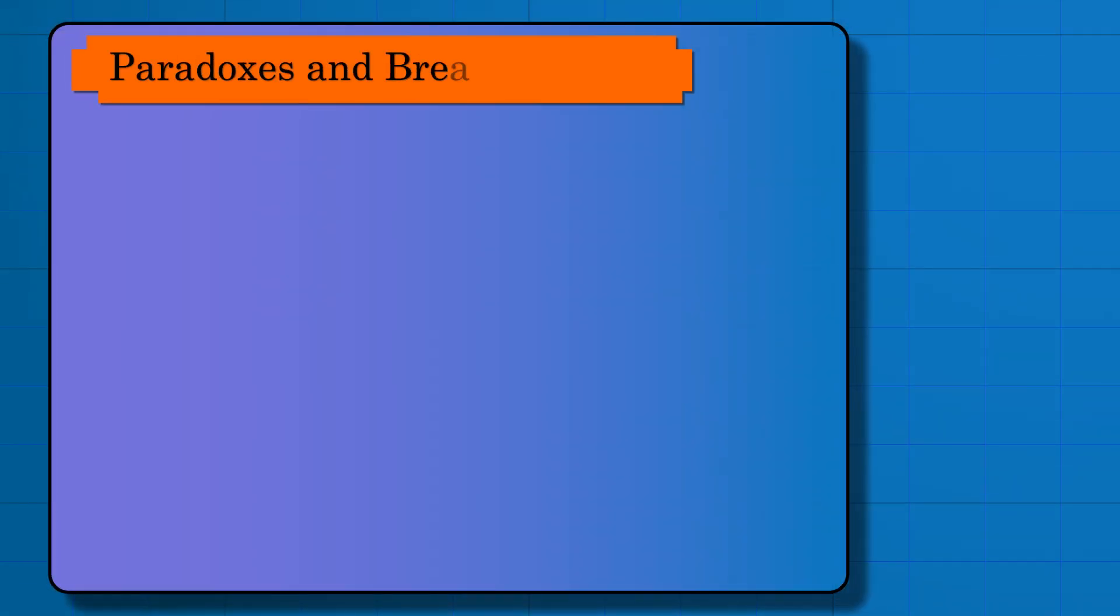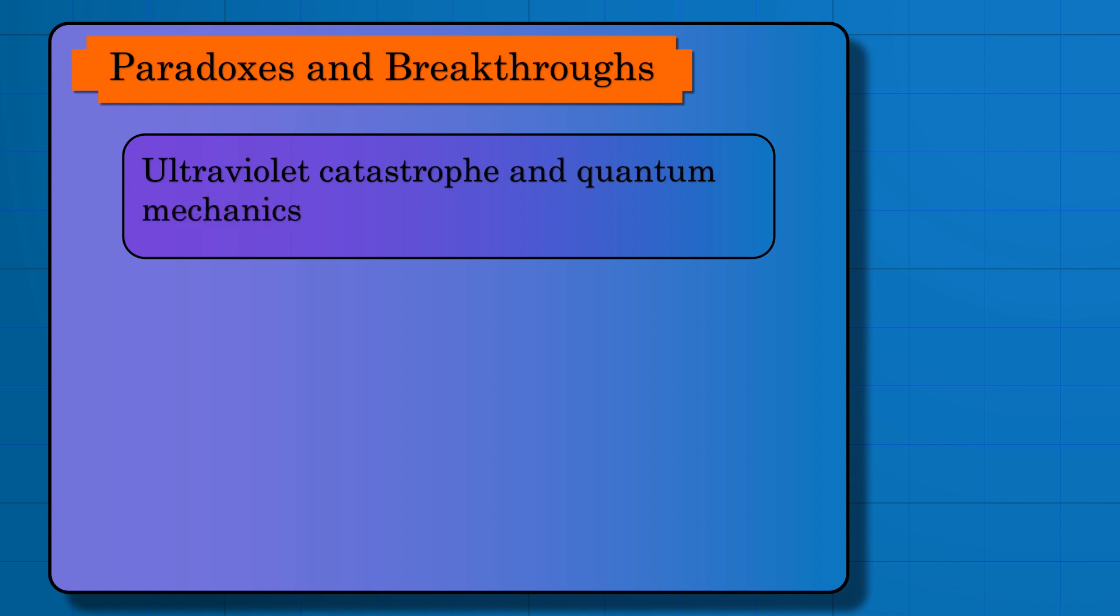History of physics has shown us time and again that anytime two major principles clash and create a paradox, a major breakthrough lurks around.